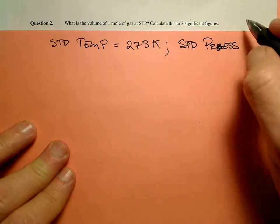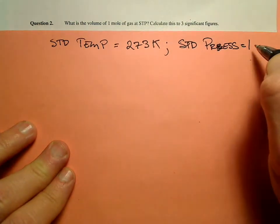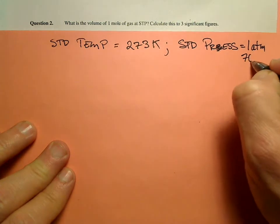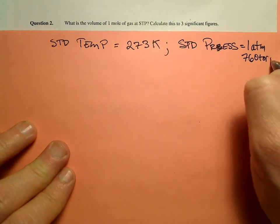pressure is equal to one atmosphere, or 760 torr, depending on the situation.